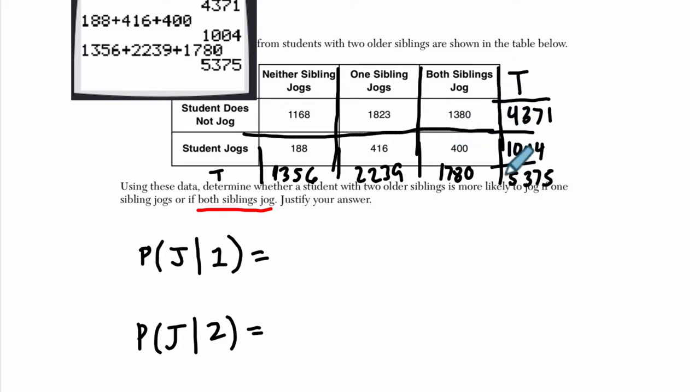I'm going to look at the conditional probabilities. The first one is they jog given that they have one sibling who jogs. So we're looking at the category here, one sibling who jogs, and that's out of 2239. There are 2,239 students in the category where one sibling jogs. Out of that category, there are precisely 416 who jog. So if you knew that out of the 2,239 students who have one sibling that jogs, 416 of them do jog, you divide those two numbers and you get that probability.